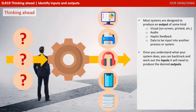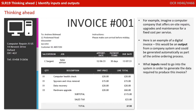Once you understand what your system does, you can backtrack and work out the inputs it will need to produce the desired outputs. For example, imagine a computer company that offers on-site repairs, upgrades, and maintenance for a fixed cost per service. Here's an example of a digital invoice. This would be an output from a company system and could be generated automatically as part of an online ordering process. What inputs would need to go into the system in order to generate the data required to produce this automatic invoice? Pause the video and study the invoice and see if you can come up with a list.